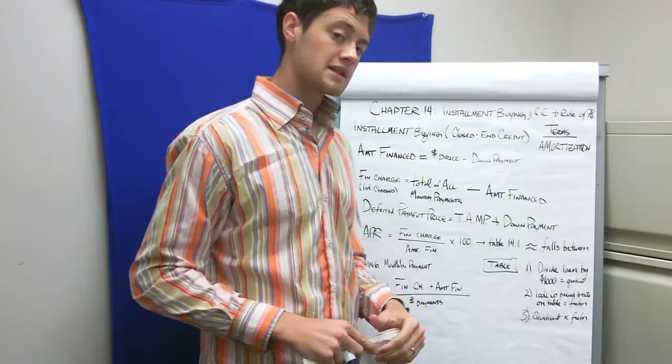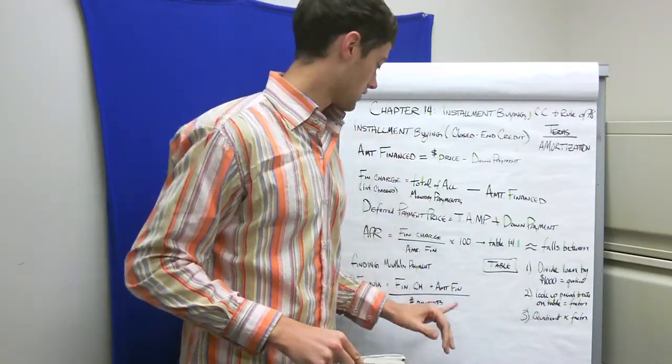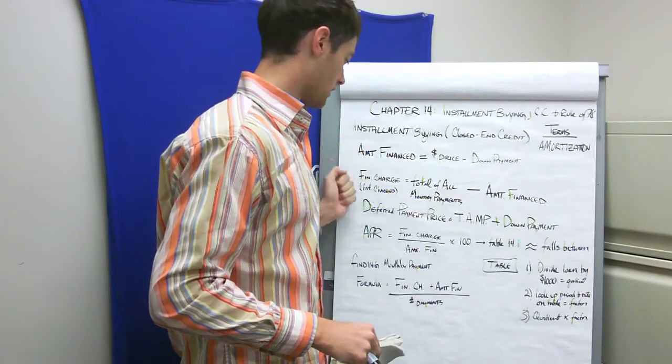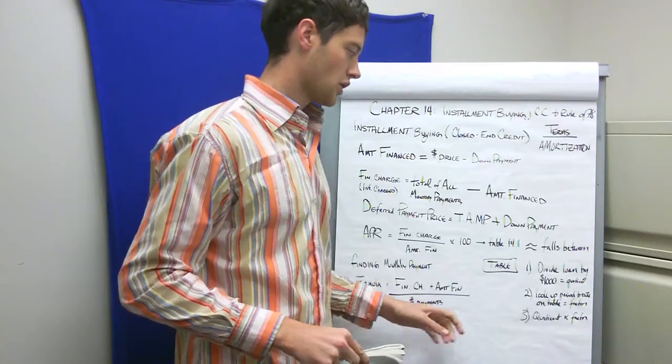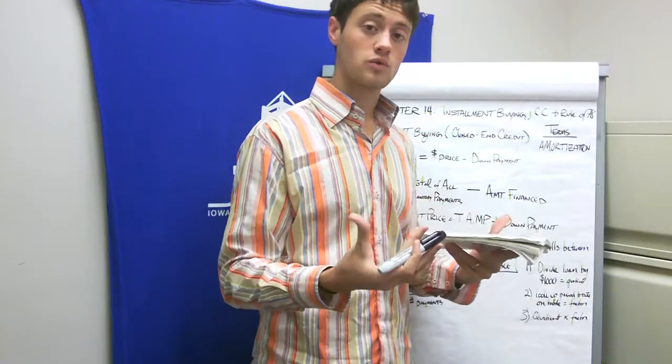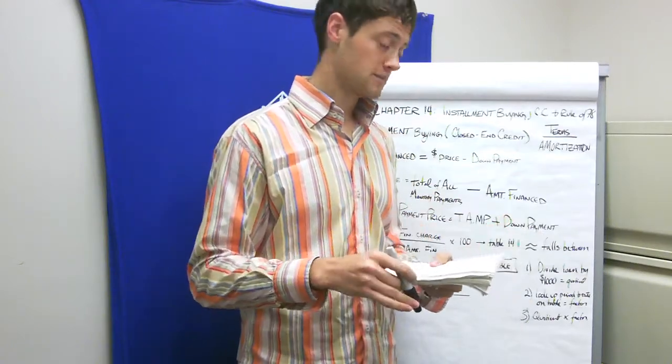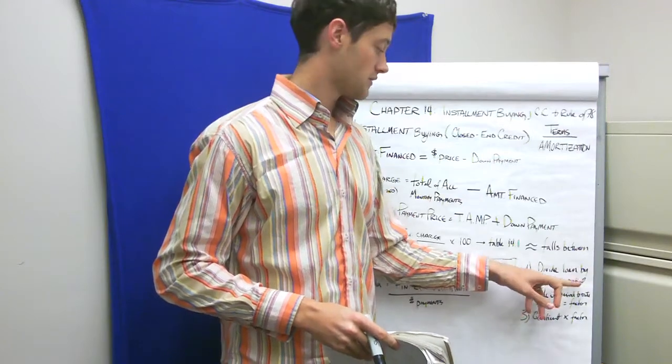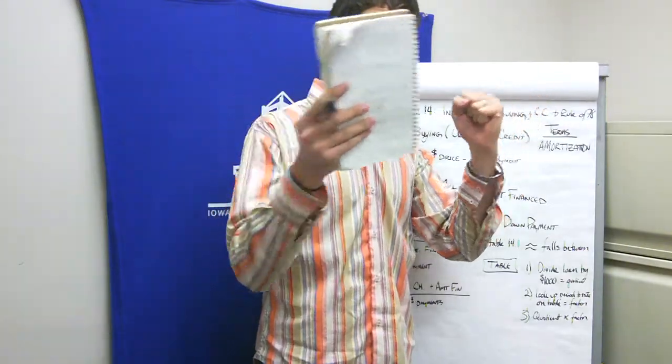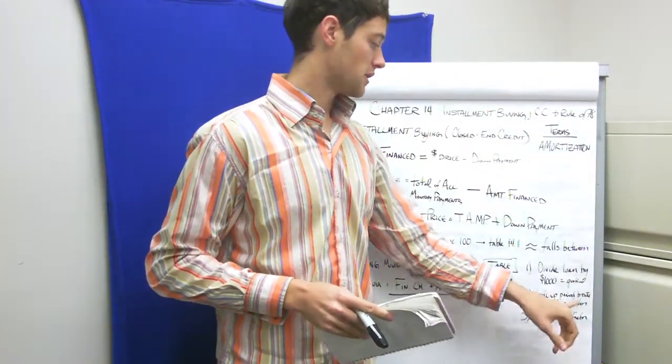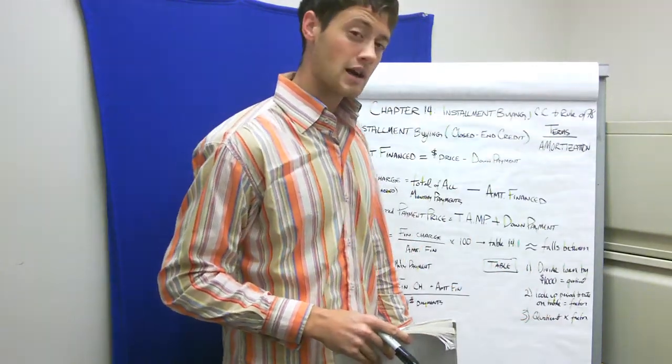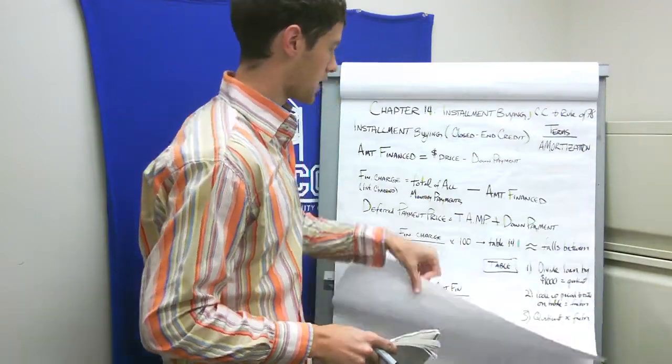There's a couple ways to calculate monthly payment. You can either add your finance charge with your amount financed and divide by the payment, which is our formula. Or we can look it up in table 14.2, where with the amount of our loan we divide by a thousand, get a quotient. Then we look up in the table our periods and interest rate. That factor will be multiplied by the quotient to get our monthly payments. A lot of talk, let's get to the nitty-gritty and try some problems.